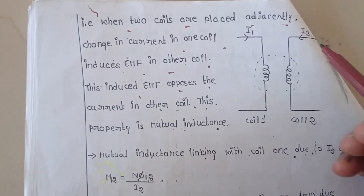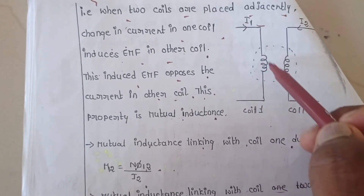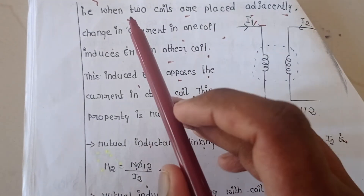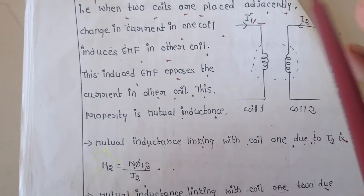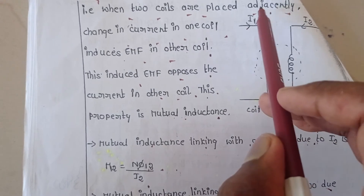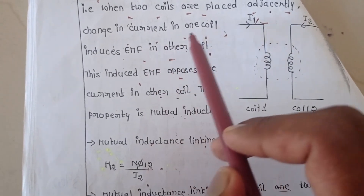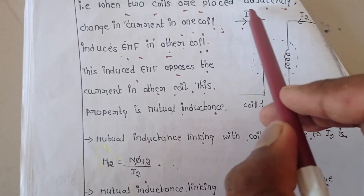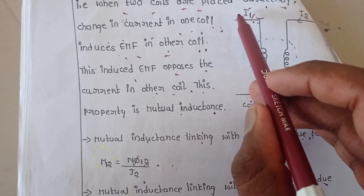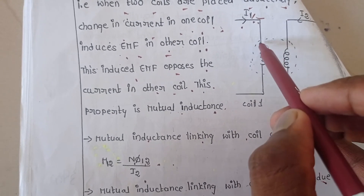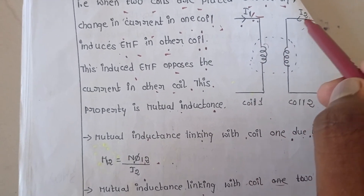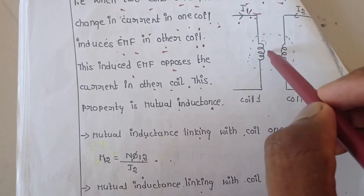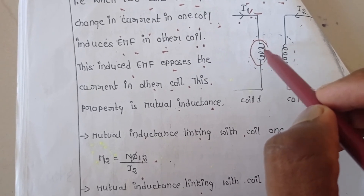Mutual inductance means we have more than one inductor. Here we have one inductor with current I1 flowing through it, and another inductor with current I2. When these two coils are placed adjacently and current flows through one coil, there is some magnetic flux produced. That magnetic flux links to the same coil and also links to the adjacent coil.